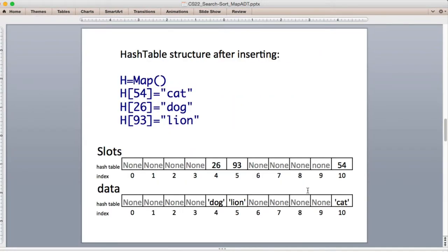So the way this works, once we have the hash table structure with this slots list and this data list, if we insert a cat at a key of 54, it's going to find the right slot for 54, which happens to be the last one. It's going to insert the key, which is the number that we look up, in the slots list.